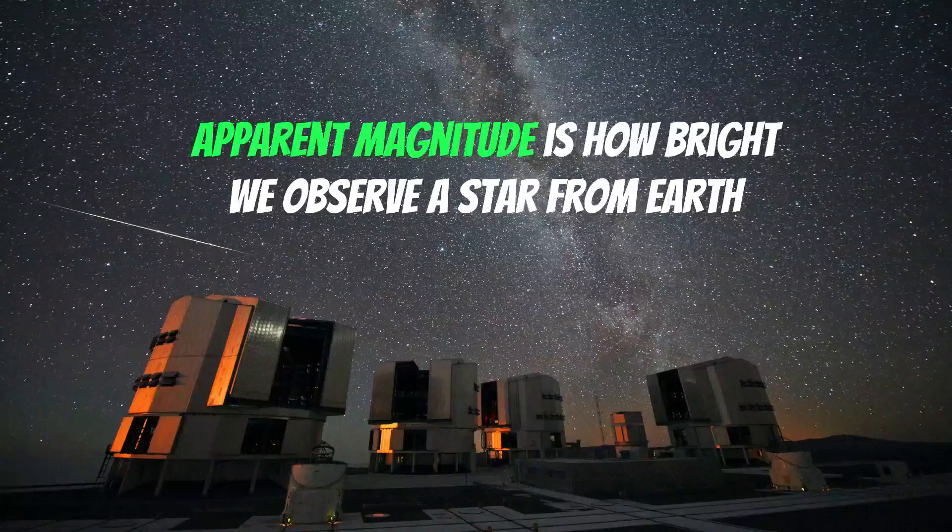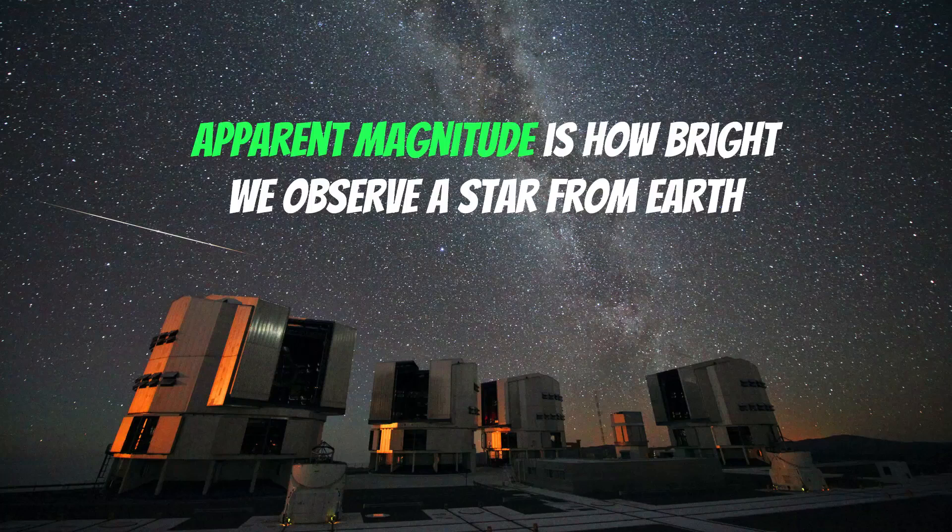So a short recap then on apparent and absolute magnitudes of stars or astronomical objects in general, but it's mostly stars. The apparent magnitude is how bright we would observe a star from Earth or from our observation point, how bright that actually appears to us. It's basically distance dependent. If it's going to be nearer to us, it will appear brighter to us. If it's further away, it's going to appear dimmer.